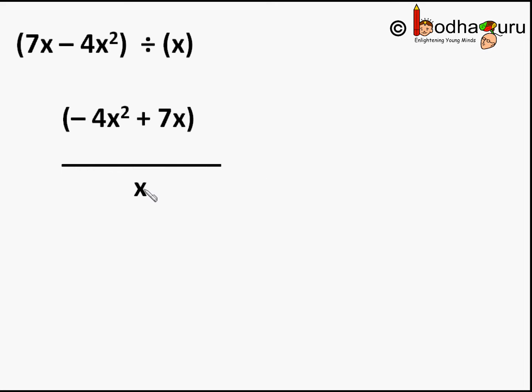Now divide -4x² + 7x by x. Taking x as common in the numerator, we get x multiplied by (-4x + 7) and the denominator is x. Now x is cancelled between the numerator and denominator. So the answer is -4x + 7.